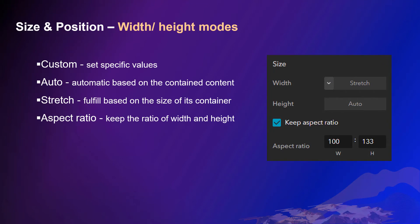Custom means you can set specific values you like. In Auto mode, the widget width and height will automatically adapt based on its contained content. Stretch mode will let the widget fulfill the size of its container — that's the full width or full height. In some widgets, you may see another option, Aspect Ratio. When one of the width or height uses Auto mode, enabling this option will keep the ratio of width and height.